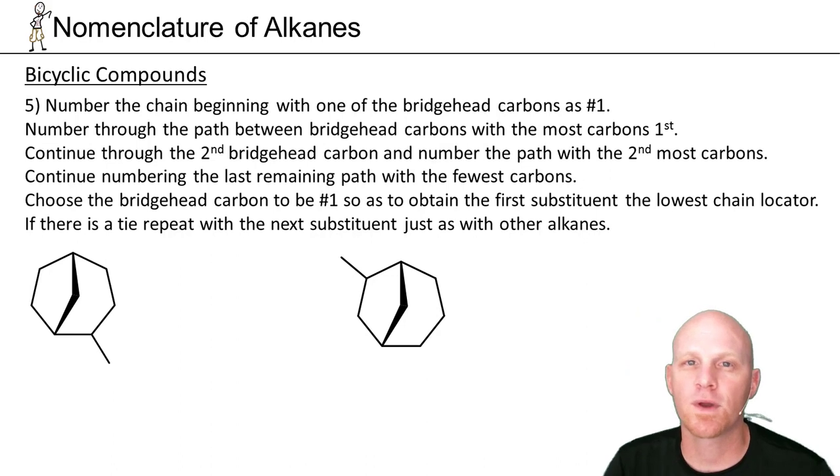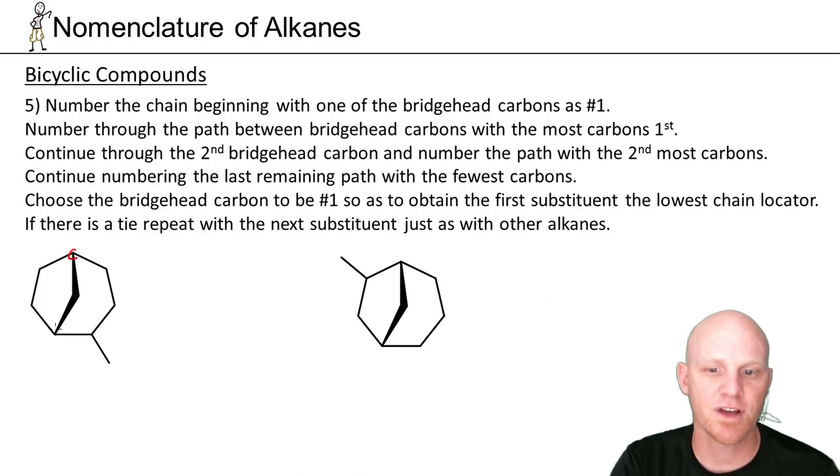So now let's take a look at what happens when you've got substituents coming off your bicyclic compounds here. So again, first thing you're going to do is identify your bridgehead carbons right there. And then you want to go ahead and count around again. And from bridgehead to bridgehead, we've got three carbons in this pathway, we've got two carbons in this pathway, and we've got one carbon in this pathway.